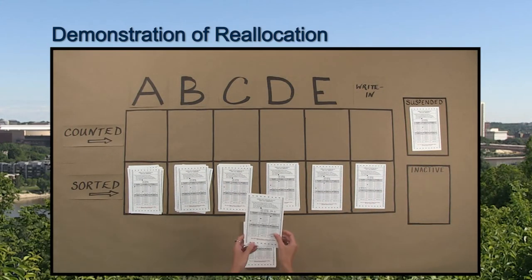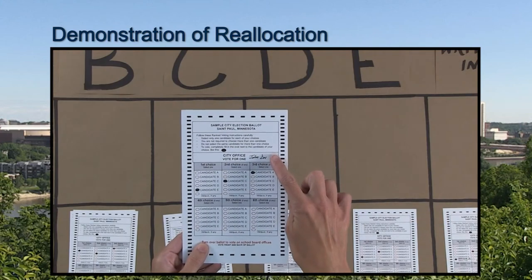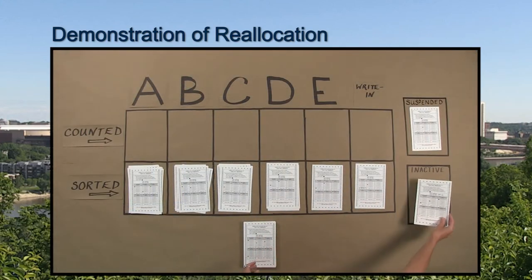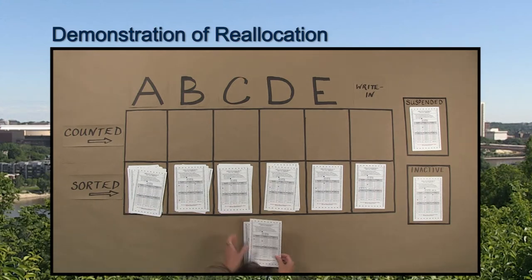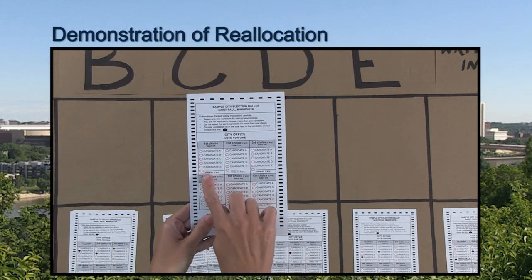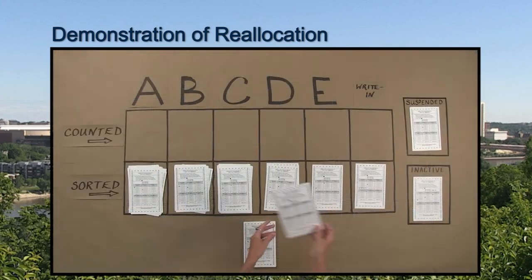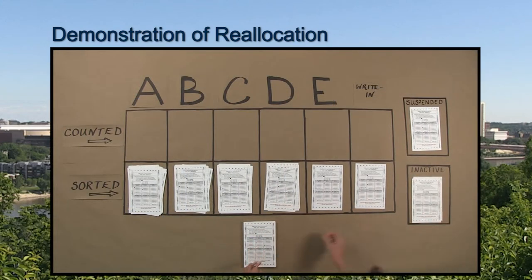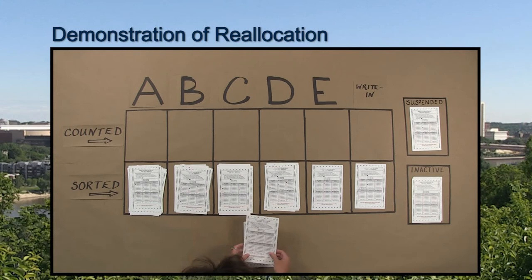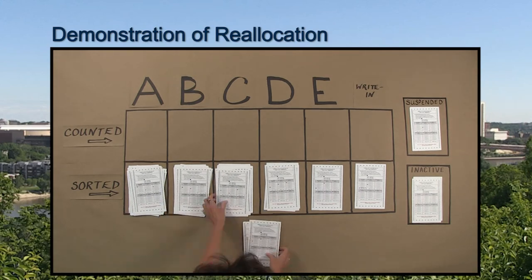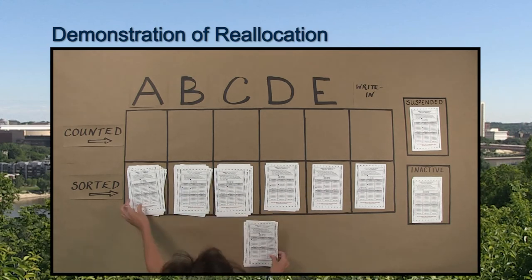This ballot contains an identifying mark and by law cannot be counted. It is placed in the inactive pile for the duration of the reallocation. Inactive and suspended ballots are not part of the first-choice votes and do not impact the threshold to win the election.